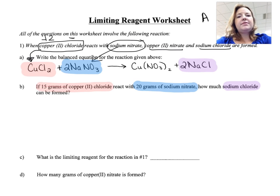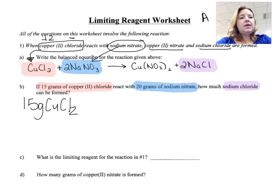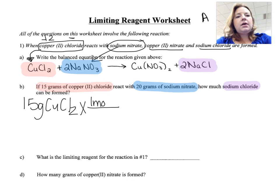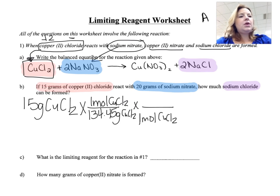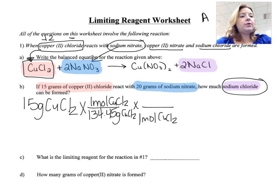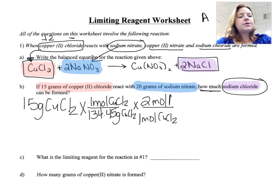Let's start with our 15 grams of copper chloride. The first step is to get to moles — always get to moles so that you can use your mole-to-mole ratio. One mole of copper chloride has a molar mass of 134.45 grams. Now that I'm in moles of copper chloride, I look at the reaction: I have 1 mole of copper chloride, and I'm going to sodium chloride. The reaction says there are 2 moles of sodium chloride formed.